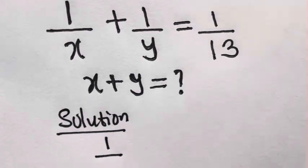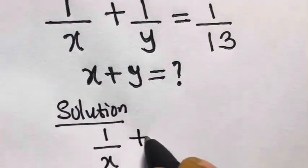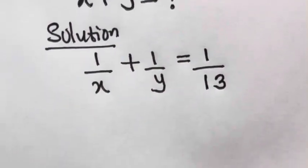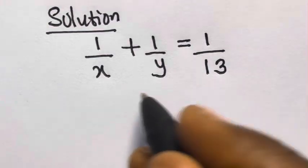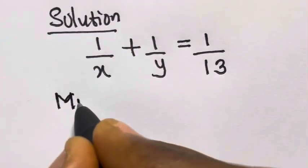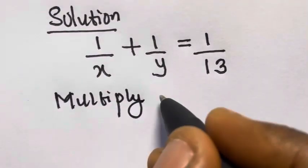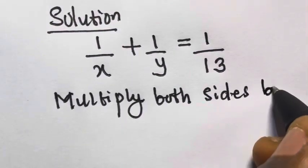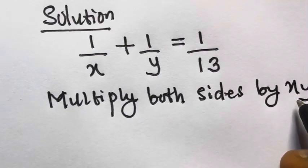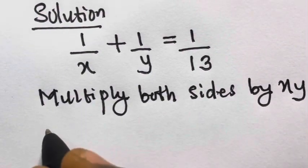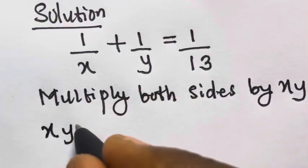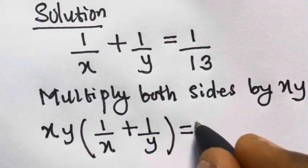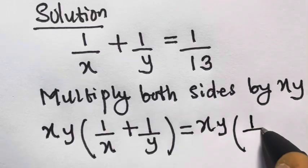So we have 1 divided by x plus 1 divided by y equals 1 divided by 13. From here, we can multiply both sides by xy. So we'll have xy multiplied by 1 over x plus 1 over y, and on the right side, we'll have xy multiplied by 1 divided by 13.